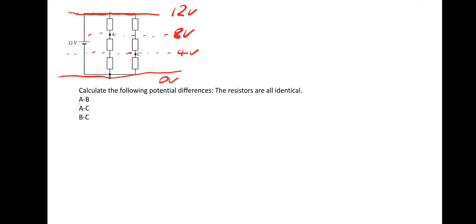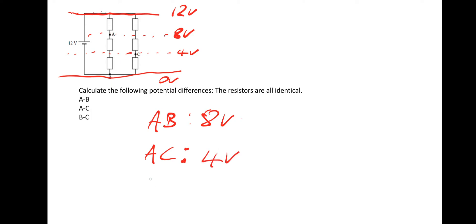The potential difference between A and B: A is at 8 volts, B is at 0 volts, so AB is 8 minus 0 = 8 volts. For AC: A is 8 volts, C is 4 volts, so AC = 8 minus 4 = 4 volts. For BC: C is 4 volts, B is 0 volts, so BC = 4 minus 0 = 4 volts.